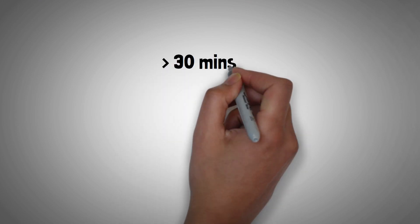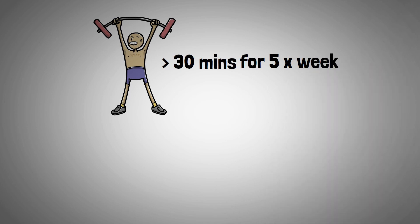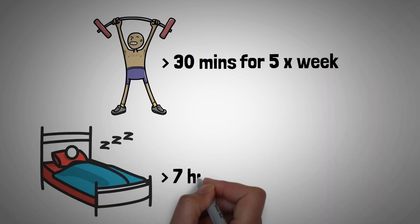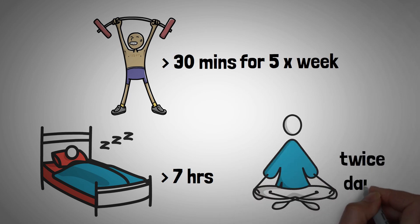In terms of lifestyle changes, the participants did a minimum of 30 minutes of moderate exercise at least 5 times a week. They slept for at least 7 hours per night and performed breathing exercises twice daily to reduce stress.